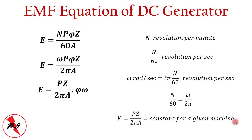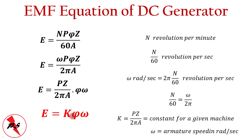We define the machine constant K = PZ / 2πA, which is constant for a given machine since the number of poles, conductors, and parallel paths do not change. The EMF equation then simplifies to E = Kφω, where ω is the armature speed in radians per second. To increase the generated EMF, we must increase the armature speed using the prime mover, assuming constant excitation.